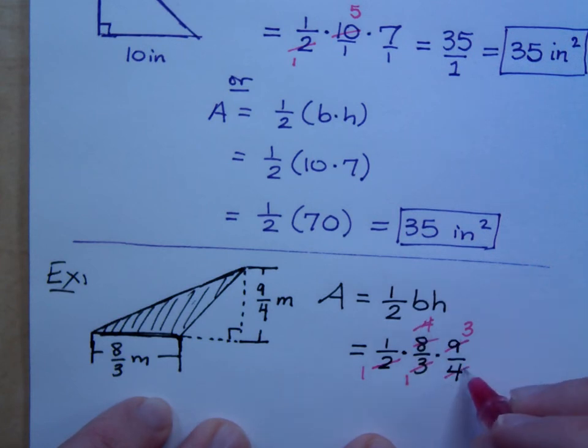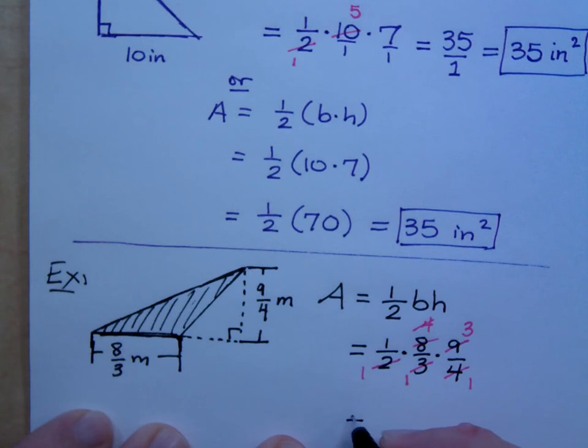So, that means my area is what? It's just 3. 3 what though?